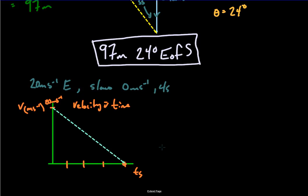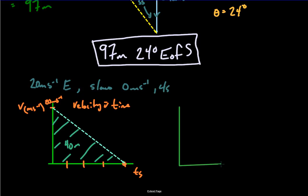The area under this velocity-time graph gives us how far we went. That's (Vf + Vi)/2 × t = (0 + 20)/2 × 4 = 10 × 4 = 40 meters. So it goes 40 meters while traveling east and slowing down. Now let's put in a displacement-time graph. The total distance covered is 40 meters over 4 seconds.